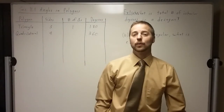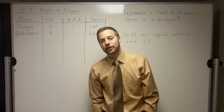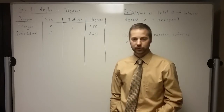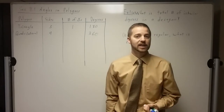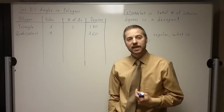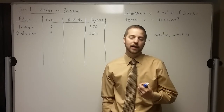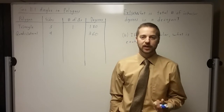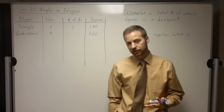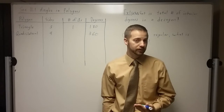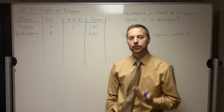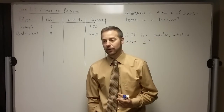Hello geometry students. We're going to start a new unit today that's all about polygons, area, circumference, and perimeter. What we're going to start with today is how to figure out angles in polygons. We're going to talk about interior angles, exterior angles, how to find the total number of degrees, and how to find each angle if it's regular.